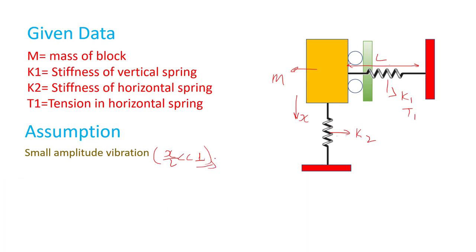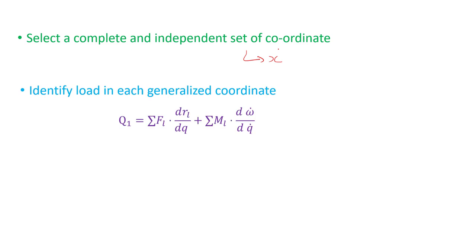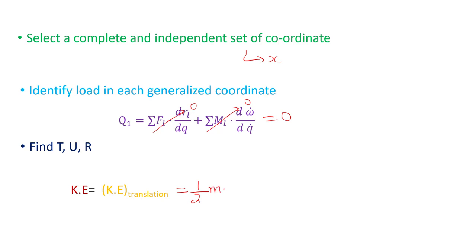Let's recall the steps required to derive the governing equation. First, we select a complete and independent set of coordinates — for this case X is our generalized coordinate. Second, we identify loads in each generalized coordinate; since there are no external forces or moments, those terms become zero. Third, we find kinetic energy, potential energy, and dissipation energy. There is no damping, so R equals zero. The kinetic energy is simply half M x-dot squared.